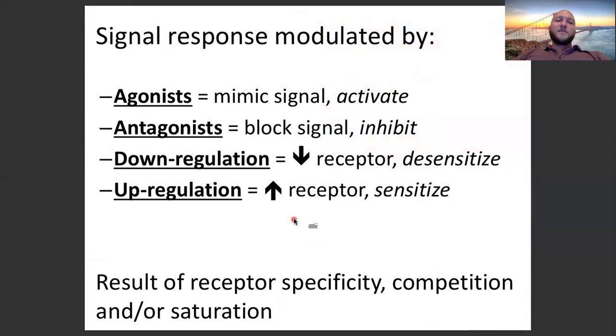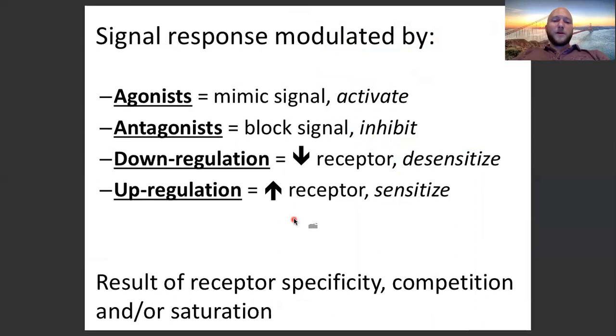In summary: agonists mimic a signal and activate the pathway; antagonists block the signal and inhibit the pathway. Down regulation decreases the number of receptors and decreases the response. Upregulation increases the number of receptors and increases the response.